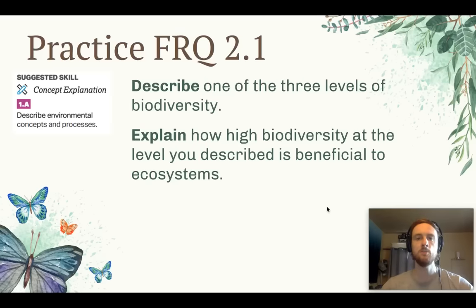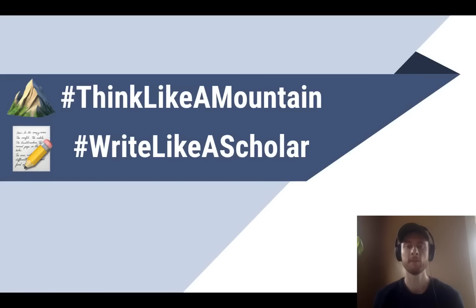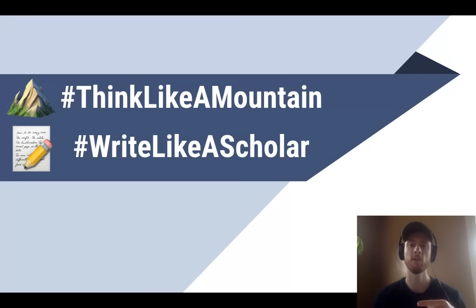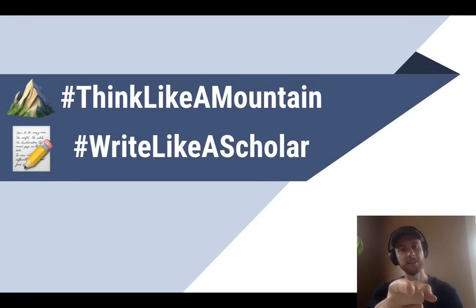The practice FRQ for topic 2.1 covers the skill of describing an environmental concept or process. Describe one of the three levels of biodiversity, then explain how high biodiversity at that level is beneficial to ecosystems. Thanks for tuning in — don't forget to like this video, subscribe for future APES video updates, and as always, think like a mountain, write like a scholar.